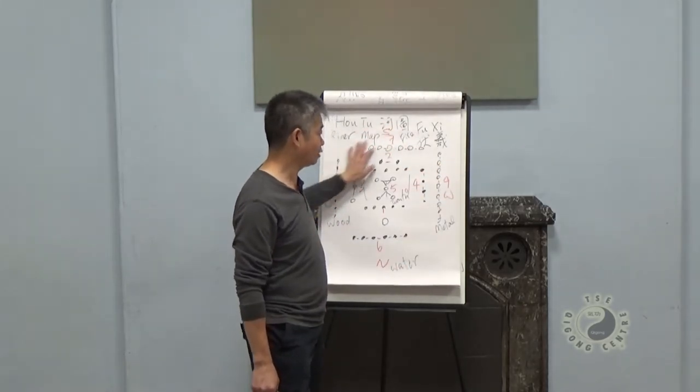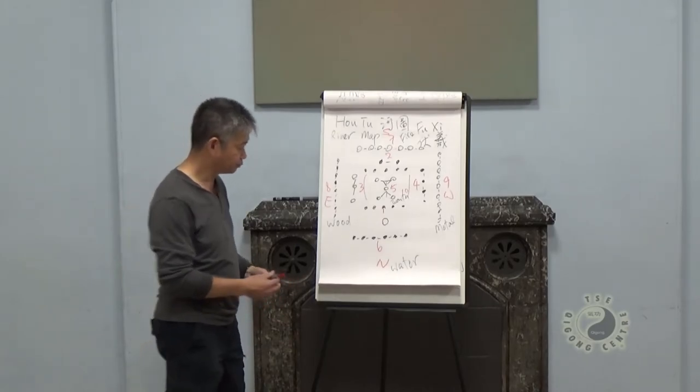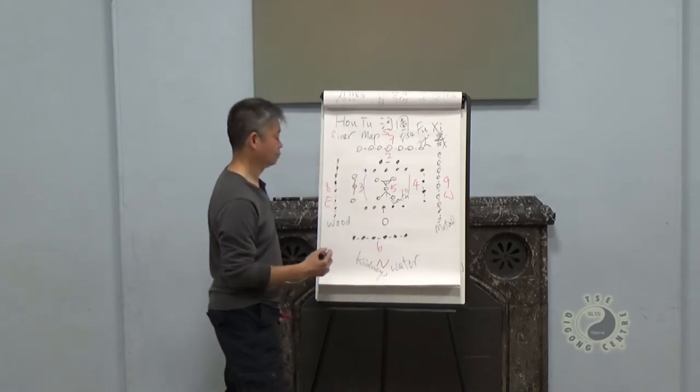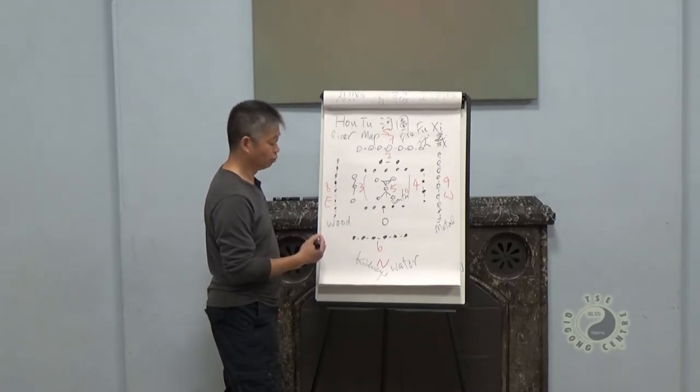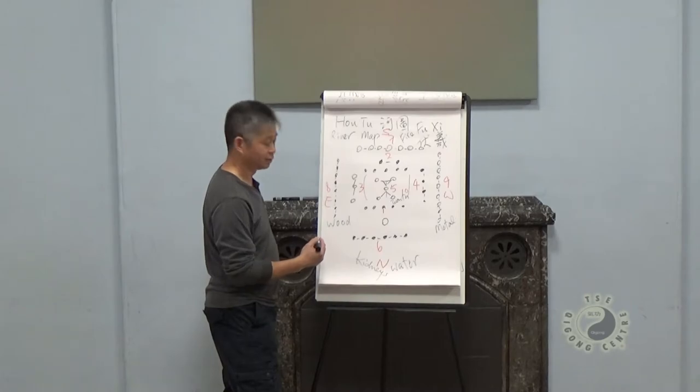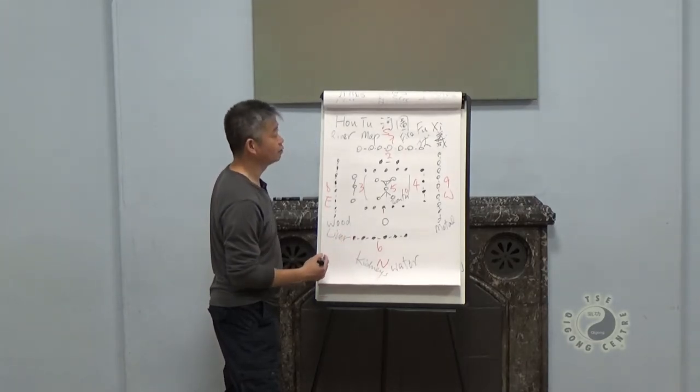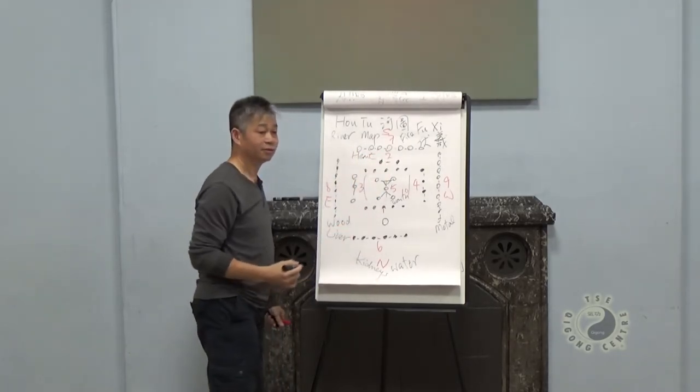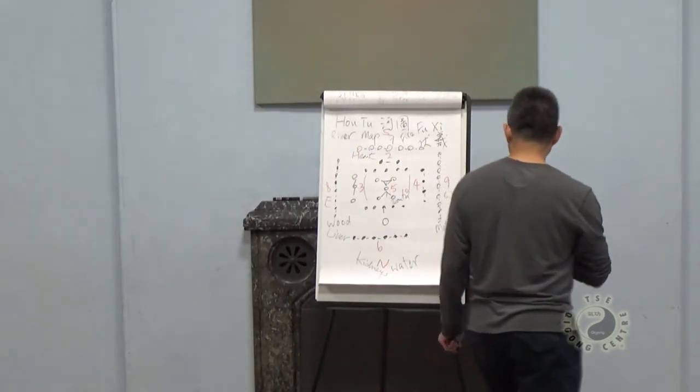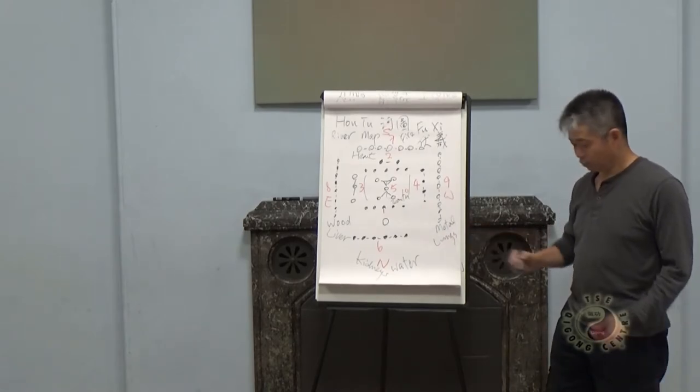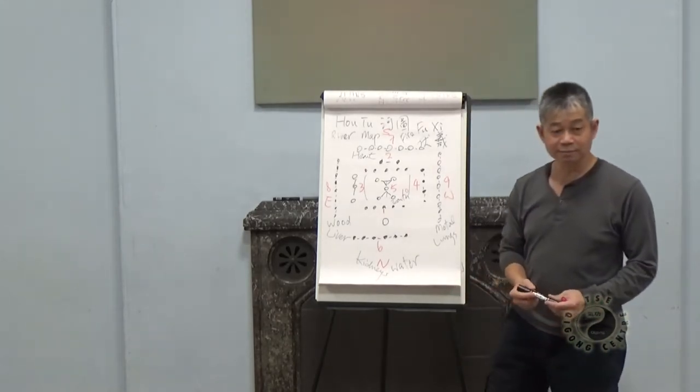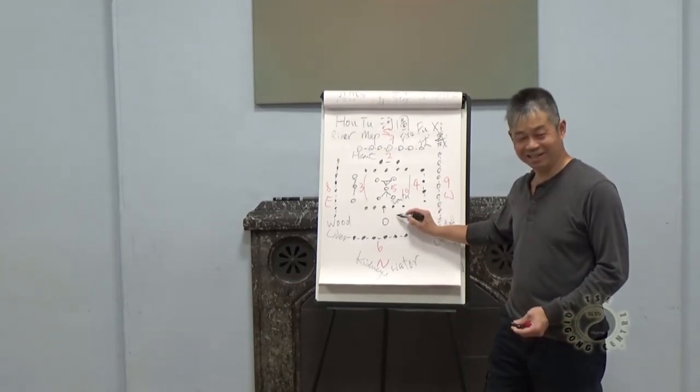He gives those names for those numbers and directions. I said we connect with the body, so water connects with kidneys. And wood—which organ related to wood? Liver, correct. What is connected with the sun, with the fire? Heart, heart, correct. Cane, what is connected with the metal? Lungs. And Joe, what is the center related to? Oh, I cheated. Sorry, I have a stomach and a spleen. Spleen, yeah.